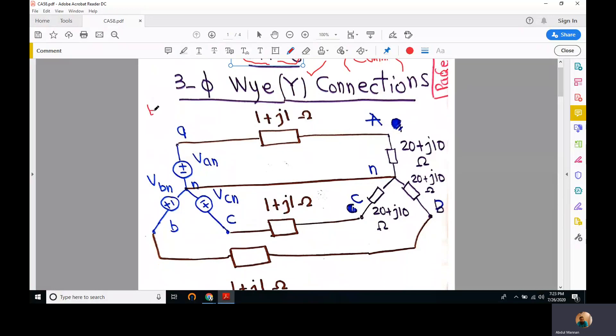In this lecture we will solve an example related to three-phase wye connected load and source. The source is wye connected or star connected, and the load is also wye connected. There are three branches and the load is balanced, meaning we have the same load in all three phases. The source voltages have the same magnitude and are balanced, meaning they are 120 degrees apart from each other.